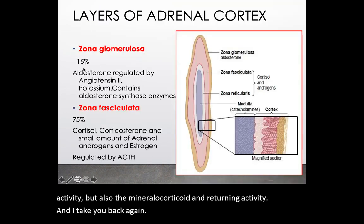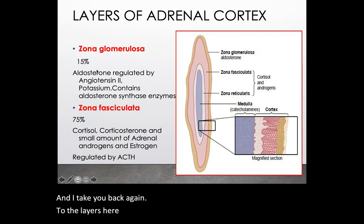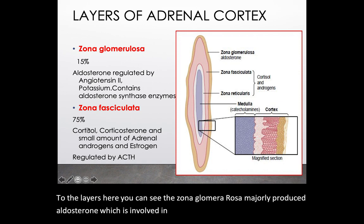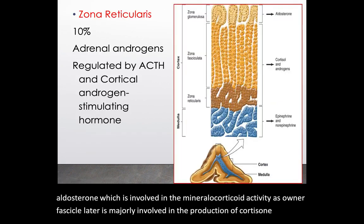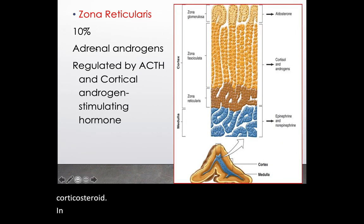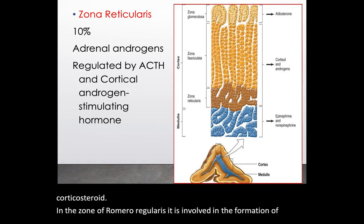Here you can see that the zona glomerulosa majorly produces aldosterone, which is involved in mineralocorticoid activity. The zona fasciculata is majorly involved in the production of cortisol and corticosterone. The zona reticularis is involved in the formation of androgens or sex hormones.